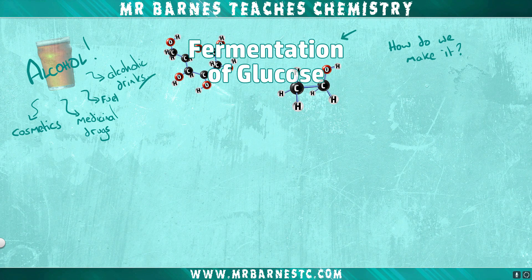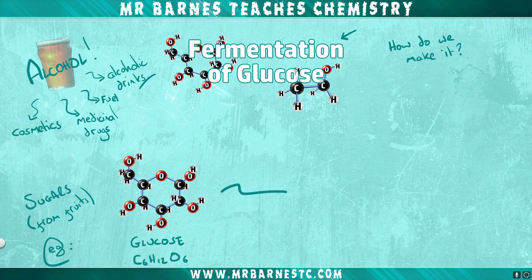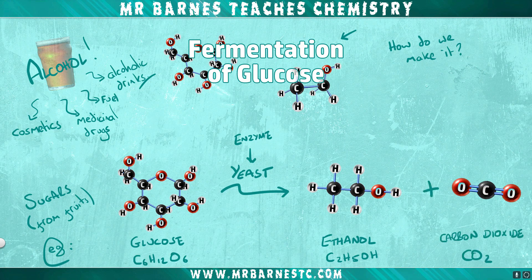To produce alcohol through fermentation we need some sugar, in particular sugar from fruits. Using glucose, which has the chemical formula C6H12O6, we add some yeast to our sugar solution. Yeast is an enzyme — a biological catalyst — meaning it speeds up chemical reactions whilst remaining chemically unchanged. It helps break down the glucose into ethanol (C2H5OH), our alcohol, and we also produce carbon dioxide (CO2) as a byproduct.